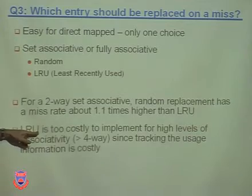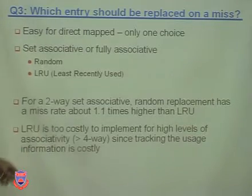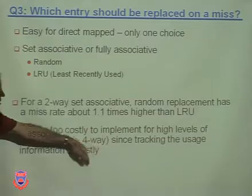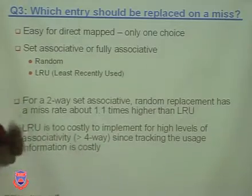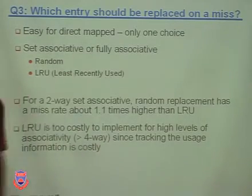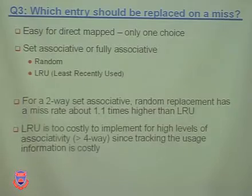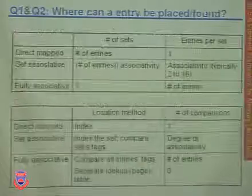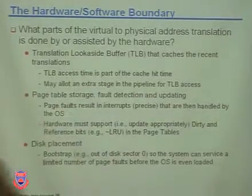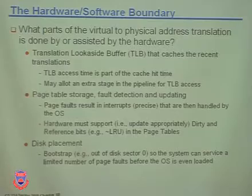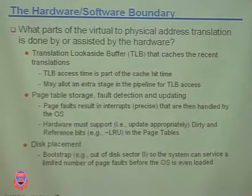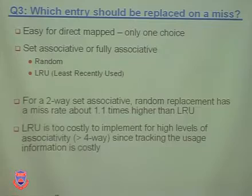Perfect LRU is too costly to implement at high associativity levels, especially greater than 4-way, since tracking exact usage order requires many extra bits and a complex algorithm. So approximate LRU is used instead — for set sizes of 4, 8, or 16, we kick out one of the least recently used entries without knowing exactly which one was least recent.